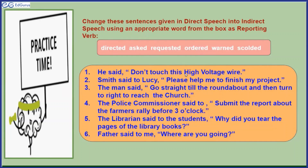Here is the sentence: He said, 'Don't touch this high voltage wire.' We are not changing the sentences into indirect speech yet — we are just learning how to change the reporting verb. When we change it into indirect speech, it would be: he warned him not to touch that high voltage wire. Another way is: he warned that we should not touch that high voltage wire.